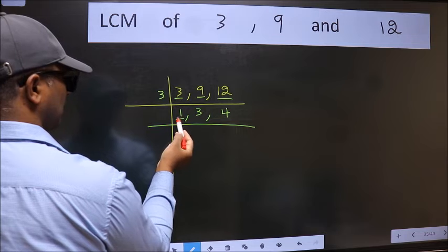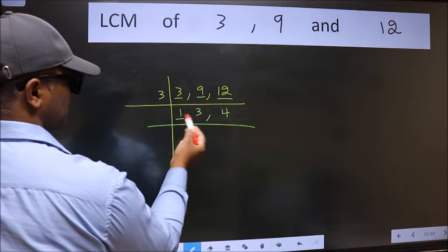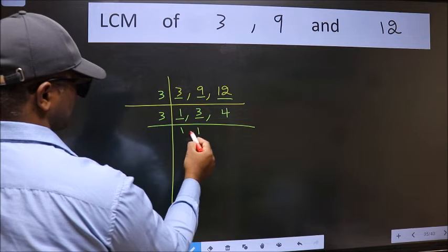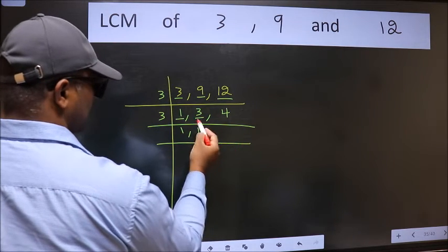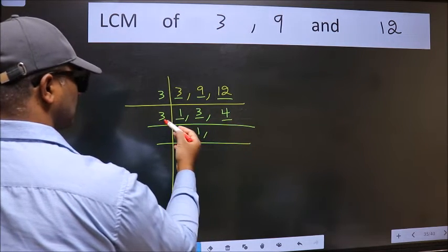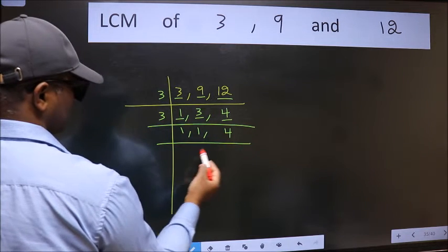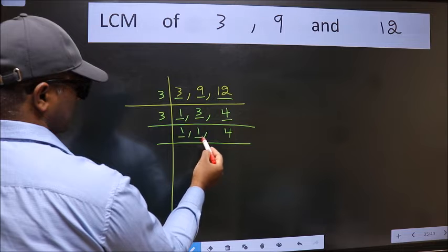Now we got 1 here. So focus on the next number 3. 3 is a prime number so 3 wants 3. The other number 4 not divisible by 3 so we write it down as it is. Now we got 1 here and here.